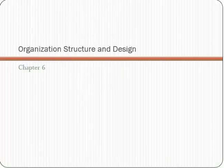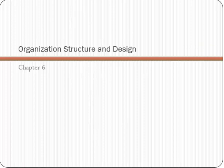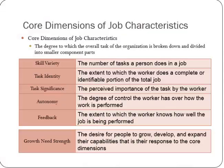Chapter six is about organization structure and design — how you establish and run a structure so that it has the most efficient results. Job characteristics, meaning how you define any particular job in the organization, has many different dimensions. You can look at skill variety — the number of tasks a person does in a job, which might be just one for an assembly line worker and thousands for a CEO. Task identity refers to the extent to which the worker does a complete or identifiable portion of the total job.